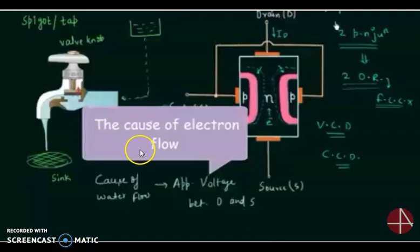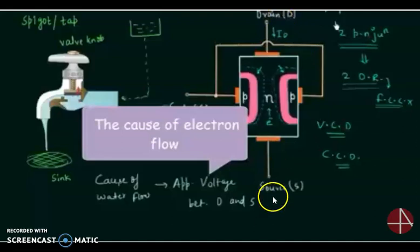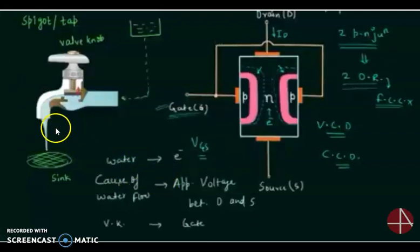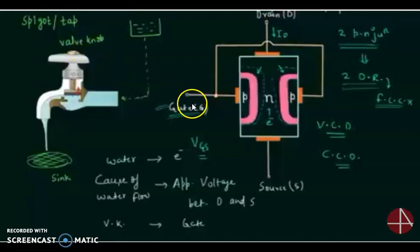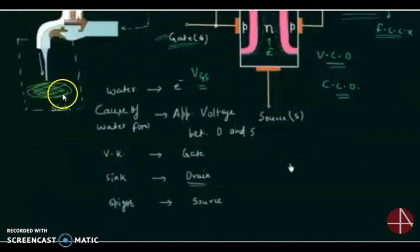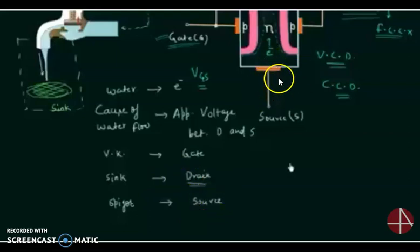To summarize the analogy: electrons flow from Source to Drain, and conventional current flows from Drain to Source. Water represents electrons, the valve represents the Gate terminal, the sink represents the Drain (electron-collecting point), and the tank represents the Source (electron-supplying point).